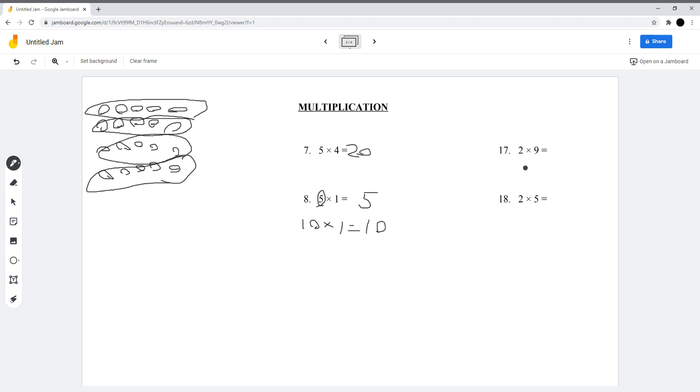And 2 multiplied by 9. Also, draw 2 circles of 9 groups. The answer is 18 for this question, and the answer for this is 10.